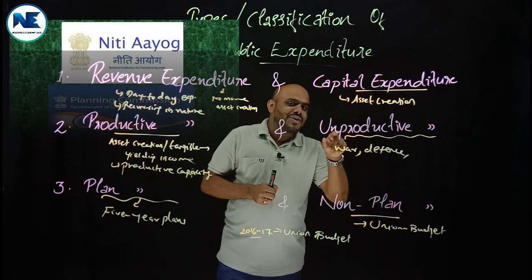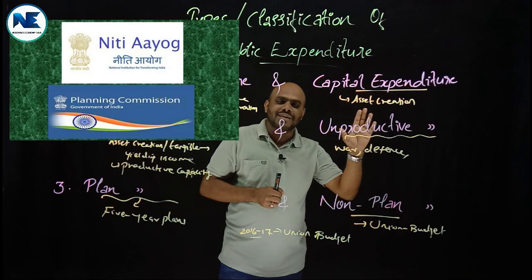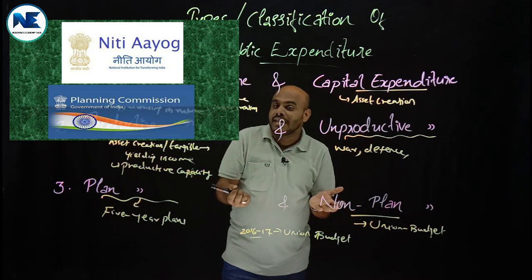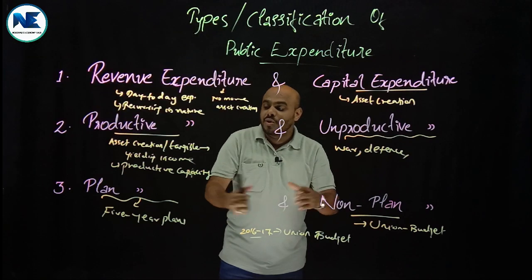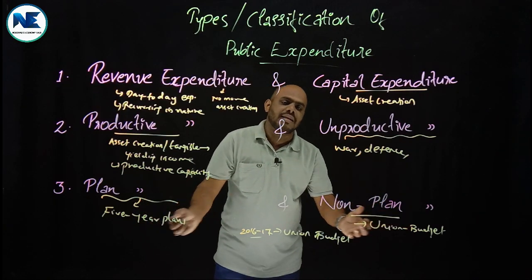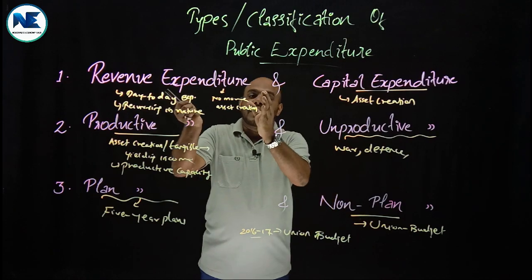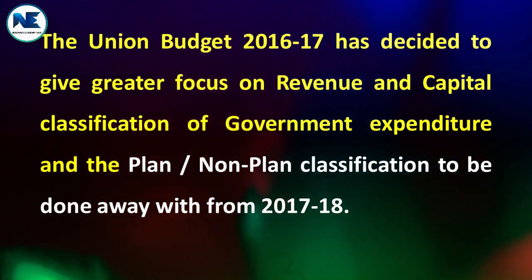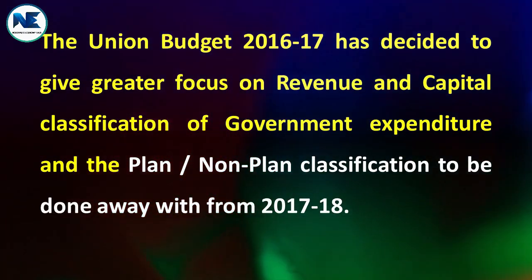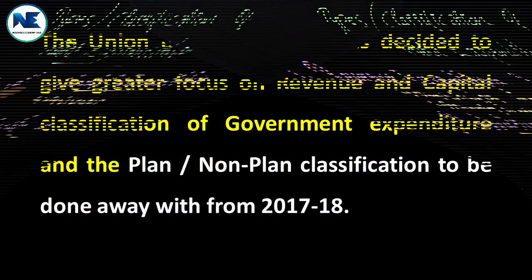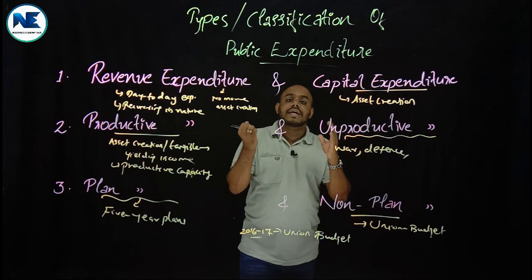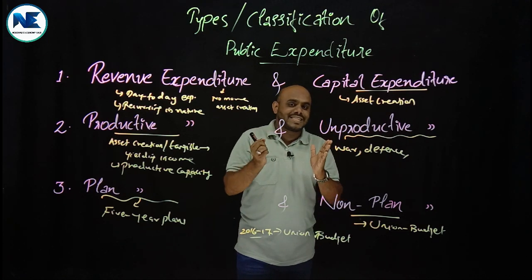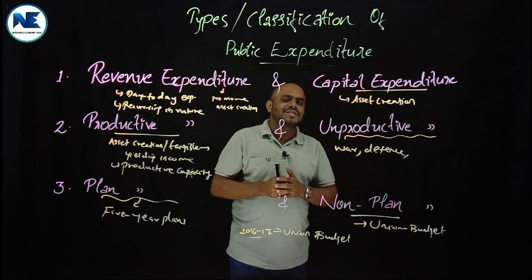There is no longer much importance given to Five Year Plans at the central level, and therefore no much importance to plan and non-plan expenditure classification. Currently, from 2017-18 onwards, we focus on revenue expenditure and capital expenditure. This is the classification or kinds of public expenditure — a very important topic. Please understand the concepts and make revisions. Thank you so much, have a nice day.